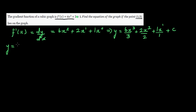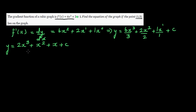Simplifying, you get y = 2x³ + x² + x + c. A good place to stop is to check whether you have integrated or anti-differentiated it correctly. Anti-differentiation is the opposite of differentiation, so you check by differentiating your result.